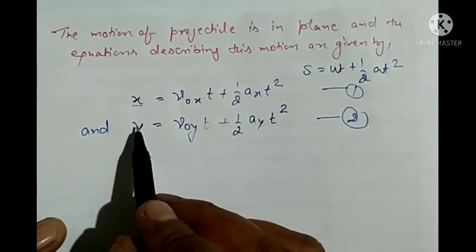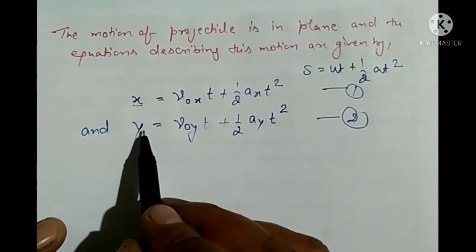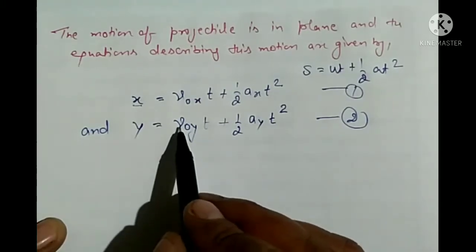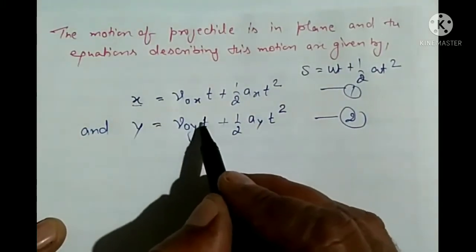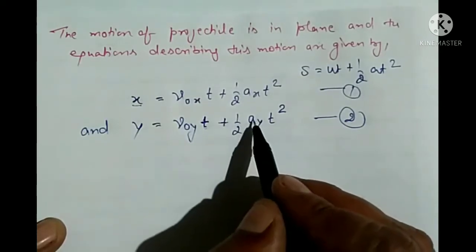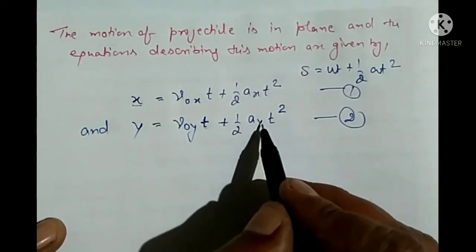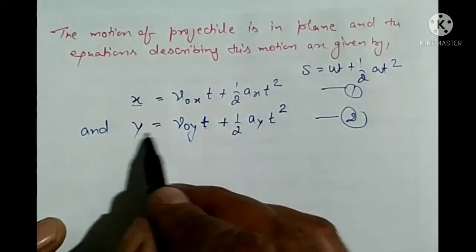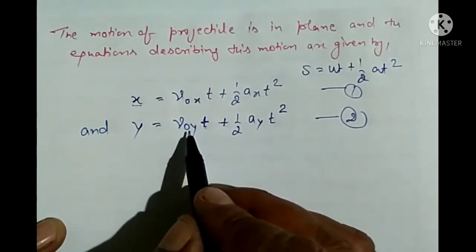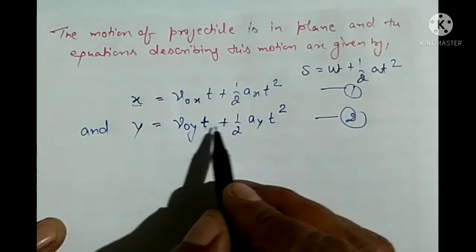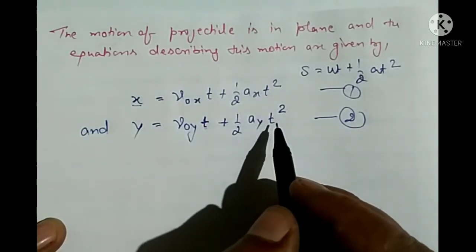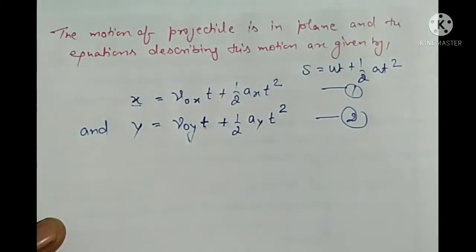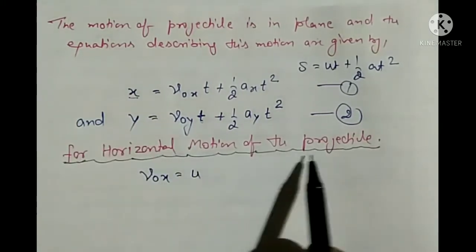And along the vertical direction, y = V₀ᵧt + ½aᵧt² — this is equation number 2.